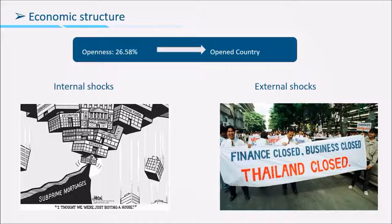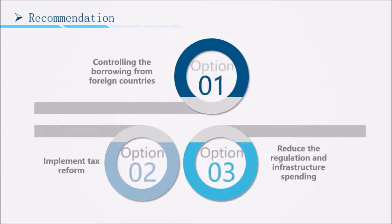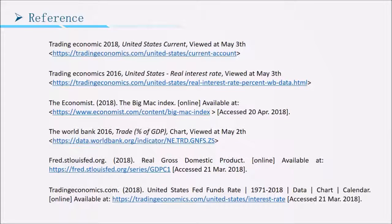Here are examples of external shocks and internal shocks. Our recommendations for the USA government are: first, controlling borrowing from foreign countries; second, implement tax reform; third, reduce regulation and infrastructure spending. That concludes this presentation. Thanks for watching.